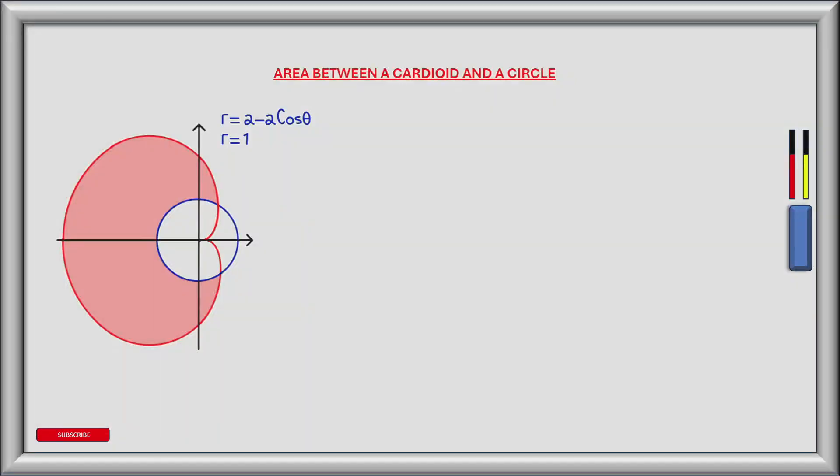Let's look at how we find the area of a polar region between a cardioid and a circle. To do this I've sketched the polar graph of r equals 2 minus 2 cos theta and a circle r equals 1. Most of the circle lies within the cardioid. The circle is centred at the origin and has a radius of 1. The red shaded region is the area we are going to find.